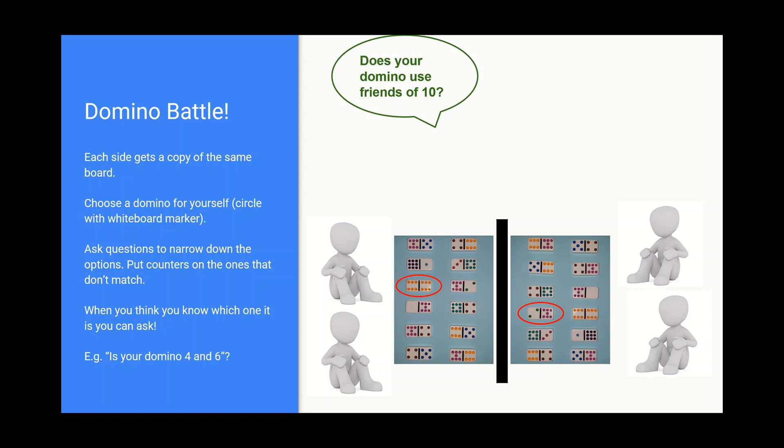So does your domino use friends of 10? Either one of them would say no, it's not friends of 10, which means that they can block off anything that is friends of 10. I'm just trying to get my cursor up. Here we go. So, for example, I can see where is friends of 10? I'm just trying to find it. Here we go. Six and four. So they would mark that one off. Over here, there's nine and one. They would mark that one off. Okay. It's not friends of 10, six and four. Mark that one off. They would be able to do that.